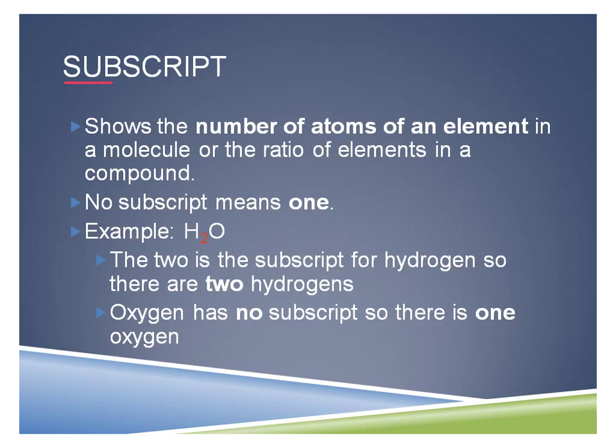The whole purpose of this number is to tell us how many atoms of that individual element are in the molecule, or it's the ratio of elements in the compound. If there is no subscript — no number at all after the letter — it implies that there is just one of that element. So in H₂O, the 2 is the subscript assigned to hydrogen, meaning I have two hydrogens. Oxygen has no subscript, so that implies there is only one oxygen. So I have two H's and one O.